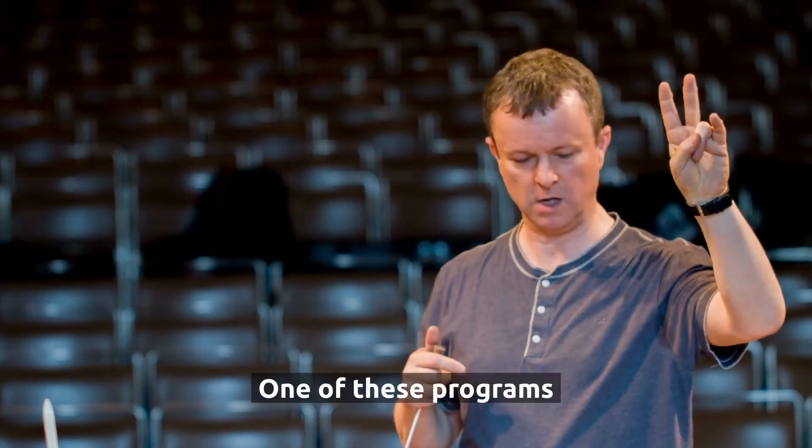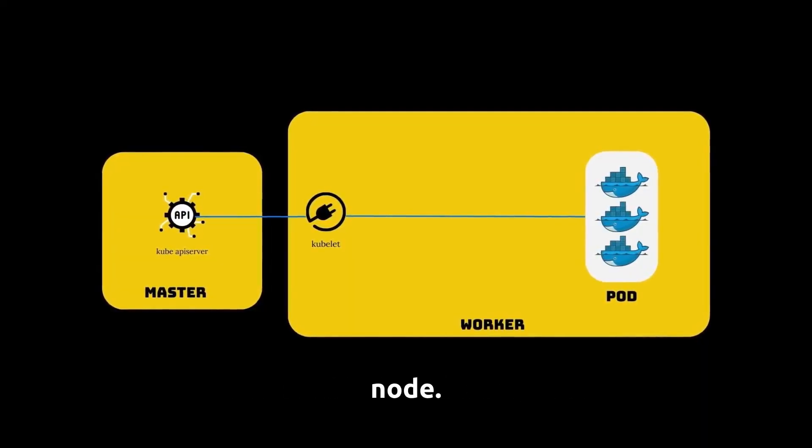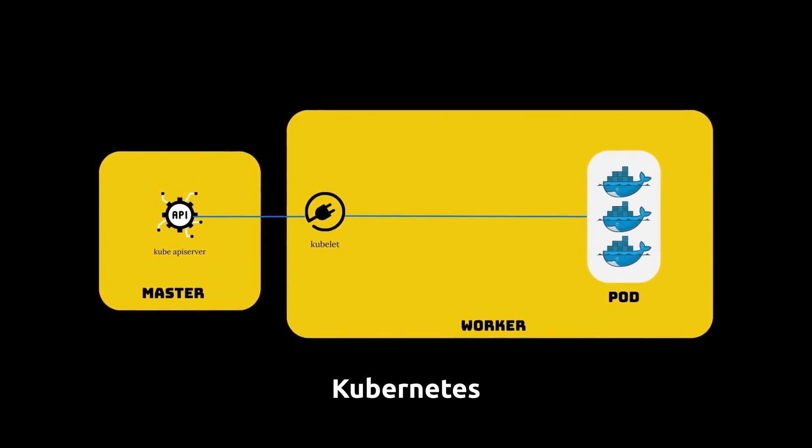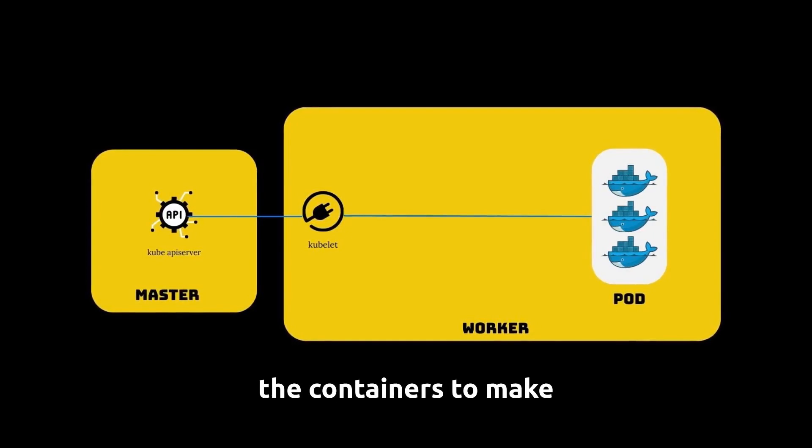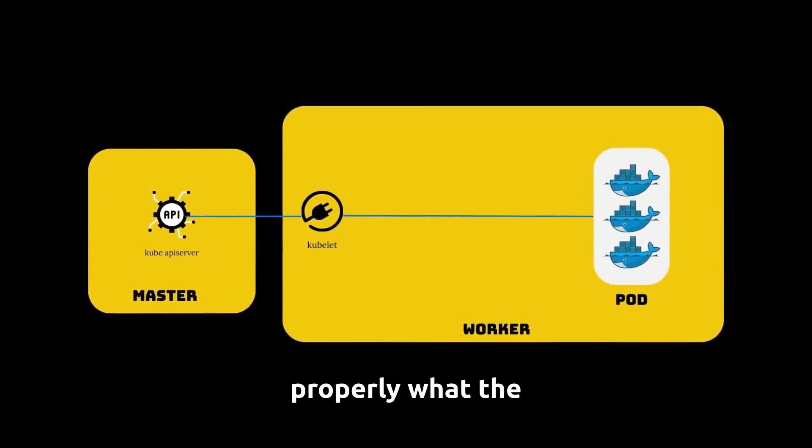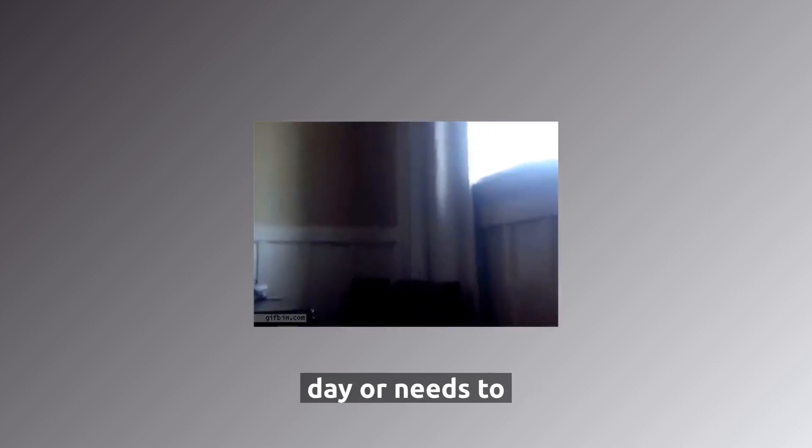One of these programs is called the kubelet. Kubelet's responsibility is running the containers on each node using Kubernetes APIs. It communicates with the Master to get instructions and it also talks to the containers to make sure they're executing properly what the Master asked. When a container is having a bit of a bad day or needs to take a break, the kubelet can handle it.